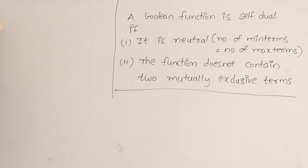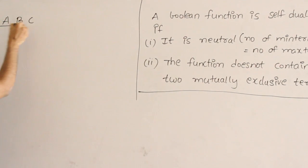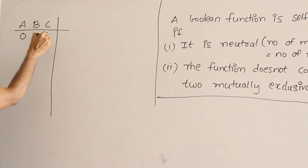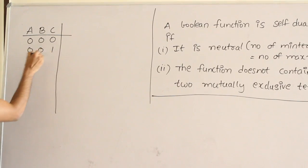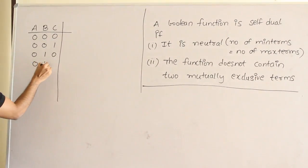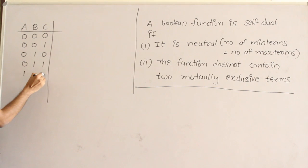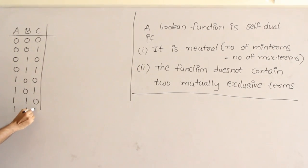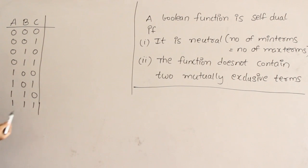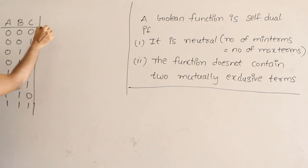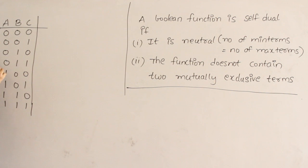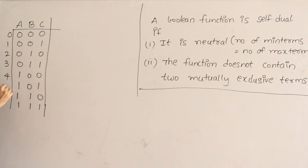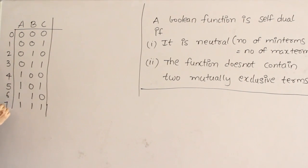Let us say I have three variables A, B, C. Then how many combinations are possible? We get minterms: 000, 001, 010, 011, 100, 101, 110, and 111. These are all the minterms possible — total 8 minterms. Let's number them: 0, 1, 2, 3, 4, 5, 6, 7. It will be convenient to represent them this way.